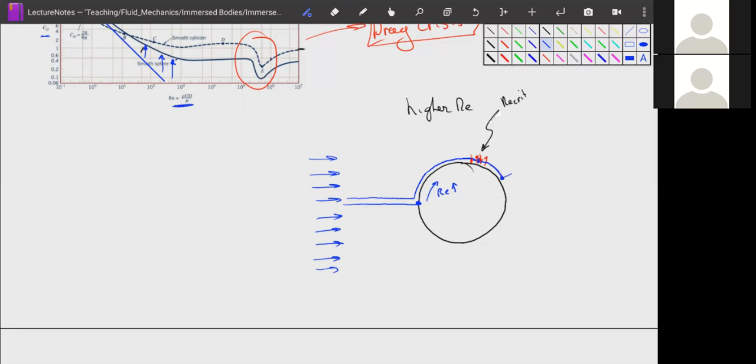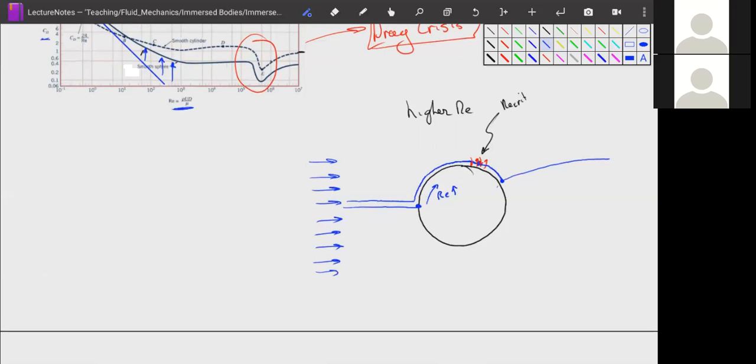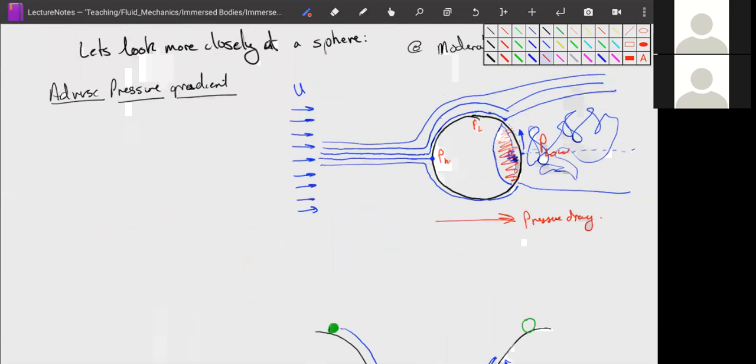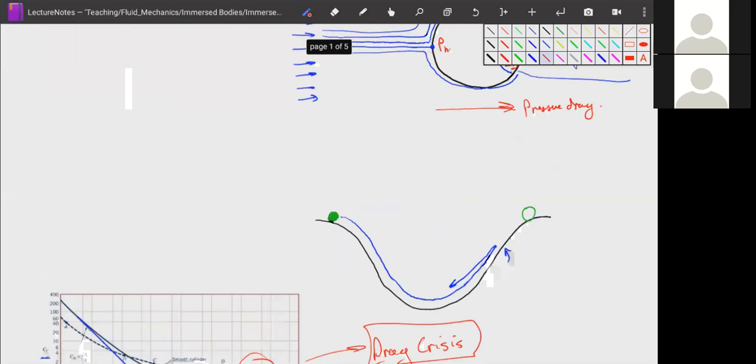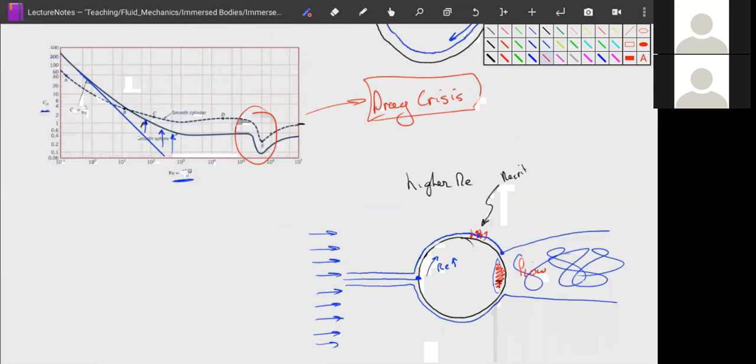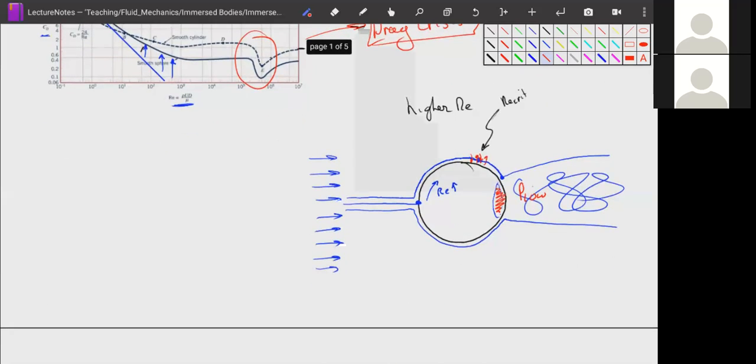And so our boundary layer can move farther down our sphere before it separates. It's not perfect. We still have some, we still have a separation point, but that separation point is now smaller. And our P-low acts on a smaller area. It acts on this area, as opposed to this very large area up here. Yeah. So that's, that's the drag crisis. And it acts at a higher Reynolds number.